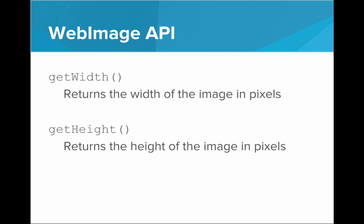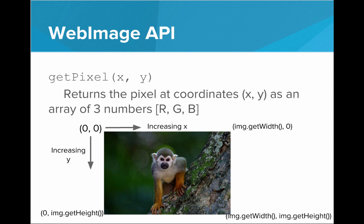We can also call getWidth and getHeight, and these will return the width and height of the image in pixels — a number that represents the number of pixels. You can also access the underlying pixel data using the getPixel function. If we call getPixel and pass an x and y coordinate, it will return the pixel at coordinates x, y as an array of three numbers: r, g, and b. So if the pixel is black, I would get an array of [0, 0, 0], and if the pixel is white, I would get [255, 255, 255]. The first index is the red value, the second is the green value, and the last is the blue value.